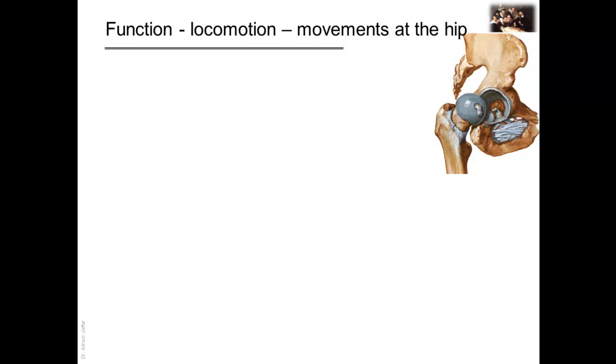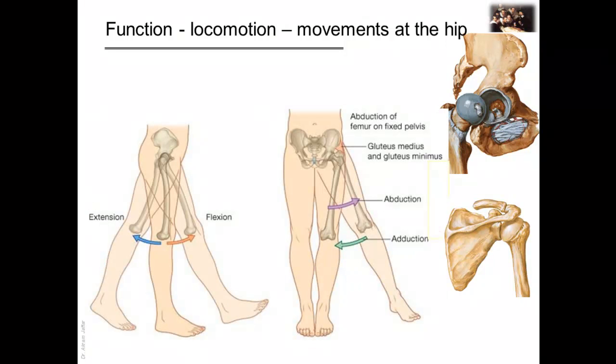A second major function of the lower limbs is to move the body through space. This involves the integration of movements at all joints in the lower limb to position the foot on the ground and to move the body over the foot. The hip joint is a synovial joint of the ball-and-socket variety. It corresponds to the shoulder joint, but it's more stable than it. This stability is at the expense of mobility. Like any other ball-and-socket joints in the body, it is a multi-axial joint, allowing movements around three axes.